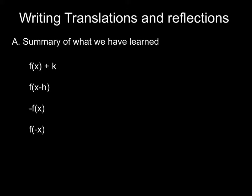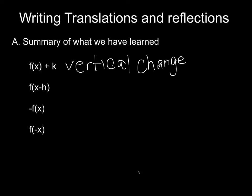Today we're writing translations and reflections. First, we'll summarize what we learned yesterday in our investigation. We looked at f(x) in different forms — what happens when we take f(x) plus k, adding a constant on the outside. It changes the y placement, which is the vertical direction, so it's a vertical change. Plus k moves it up, minus k moves it down.